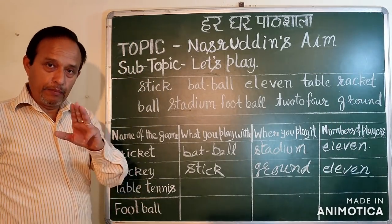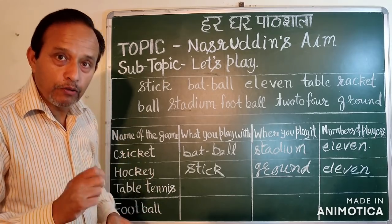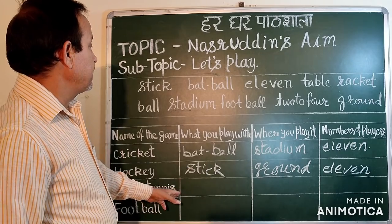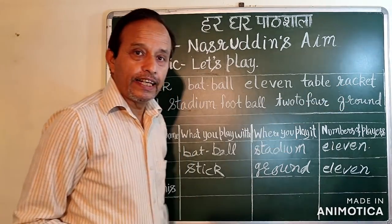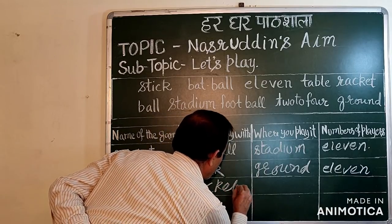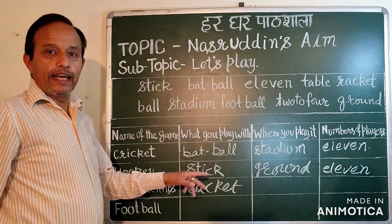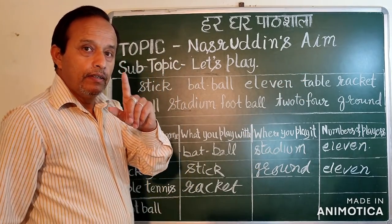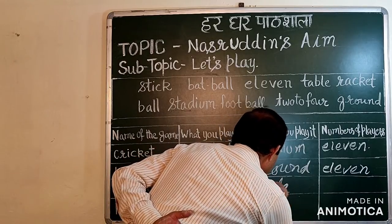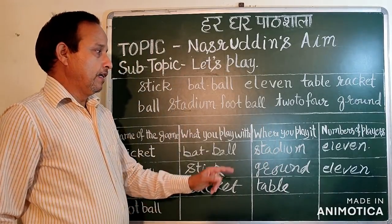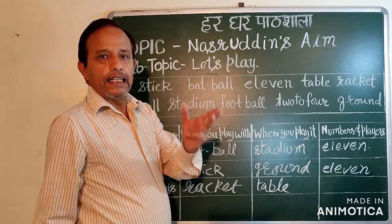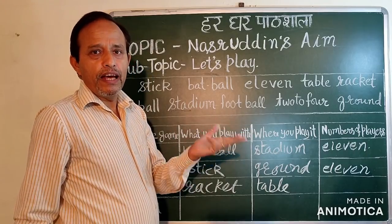Third one: Table tennis. What do you play with? It's the racket. Where do you play? Table. Basically it is an indoor game. How many players? Two, four — single or double: two or four players.